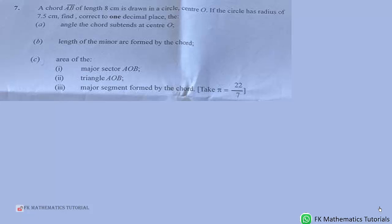AB of length 8 centimeters is drawn in a circle center O. If the circle has radius of 7.5 centimeters, find, correct to one decimal place, the angle the chord subtends at center O, length of the minor arc formed by the chord, area of the major sector AOB, triangle AOB, the area of the major segment formed by the chord. For the area, we are taking pi to be 22 over 7. So let's begin.